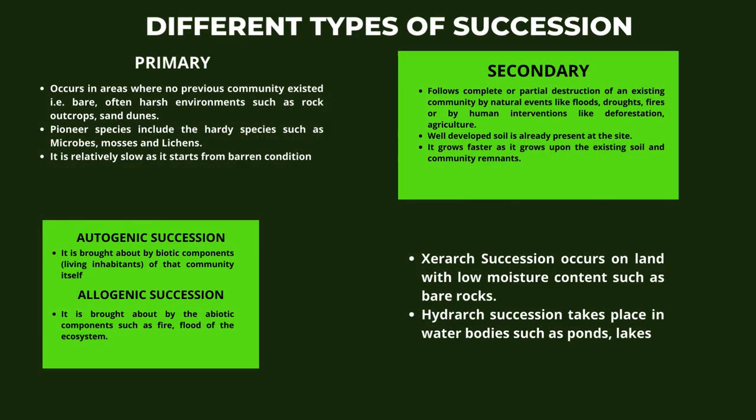Let us also learn about different types of succession. Primary succession occurs in areas where no previous community existed, such as bare, often harsh environments like rock outcrops and sand dunes. Pioneer species include hardy species such as microbes, mosses, and lichens. It is relatively slow as it starts from barren conditions.